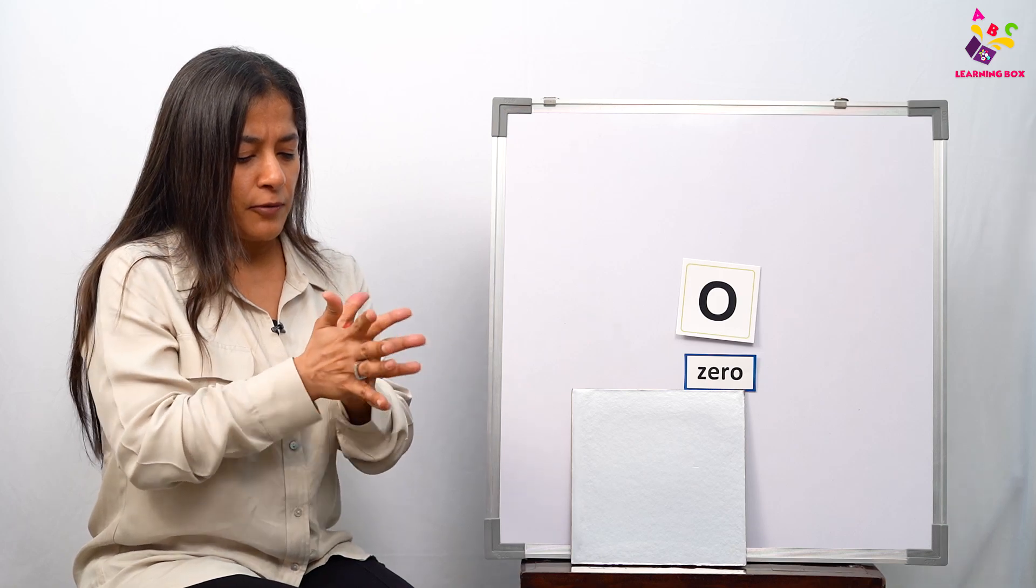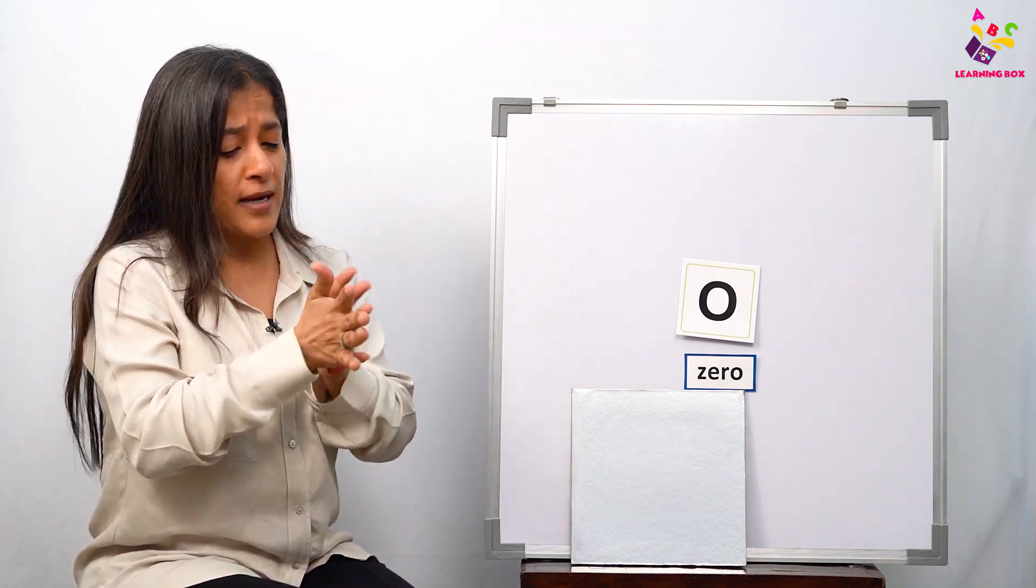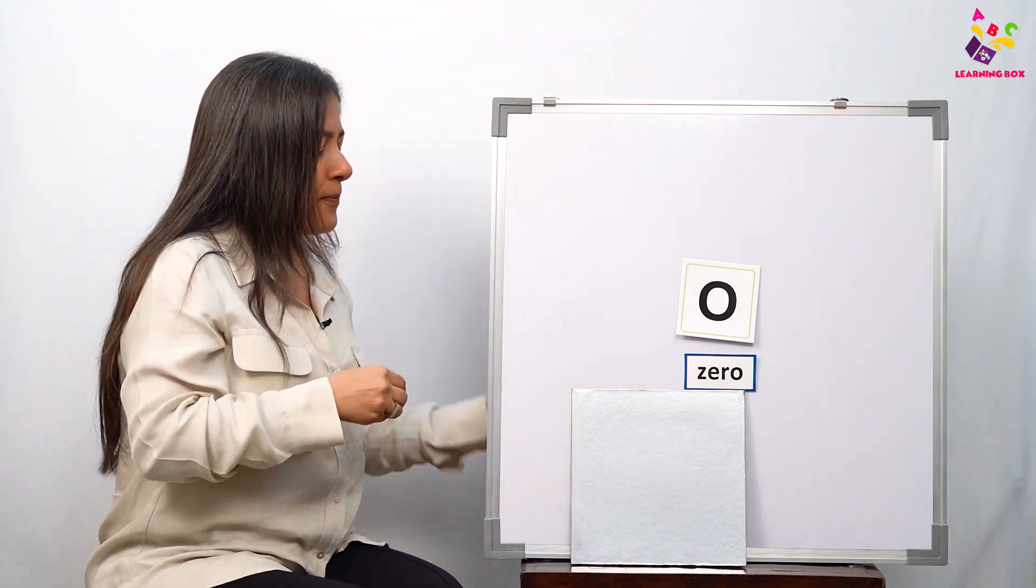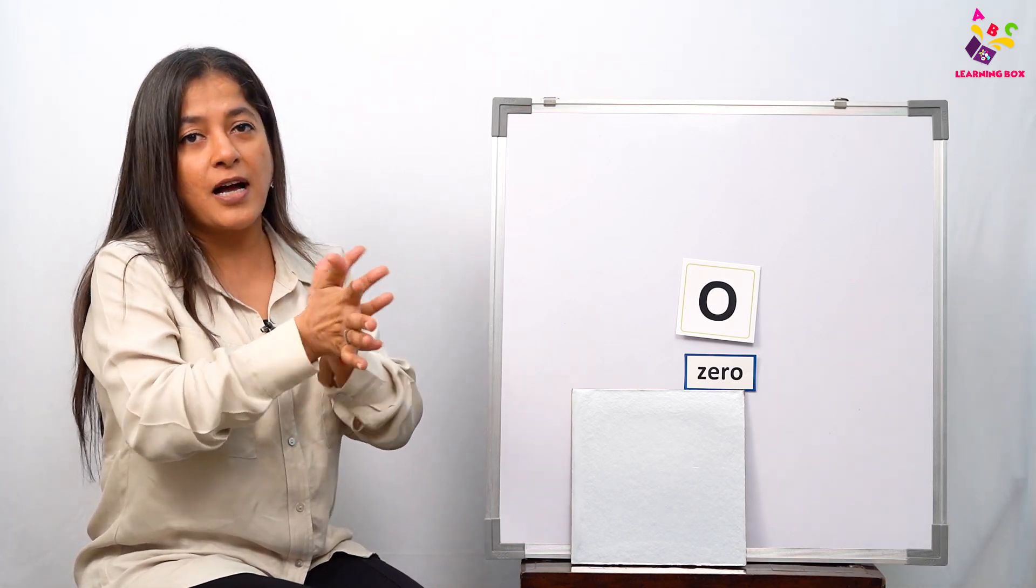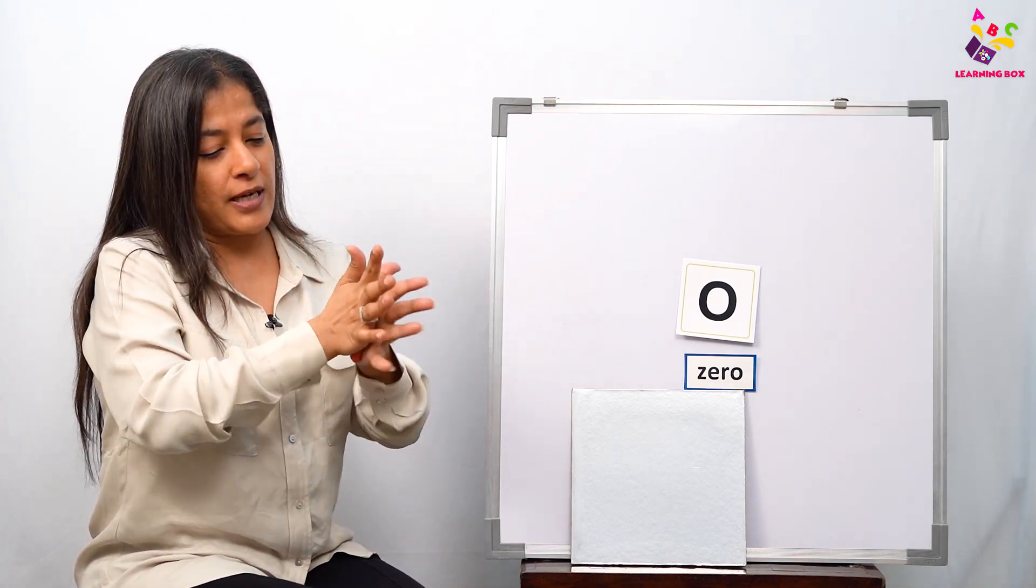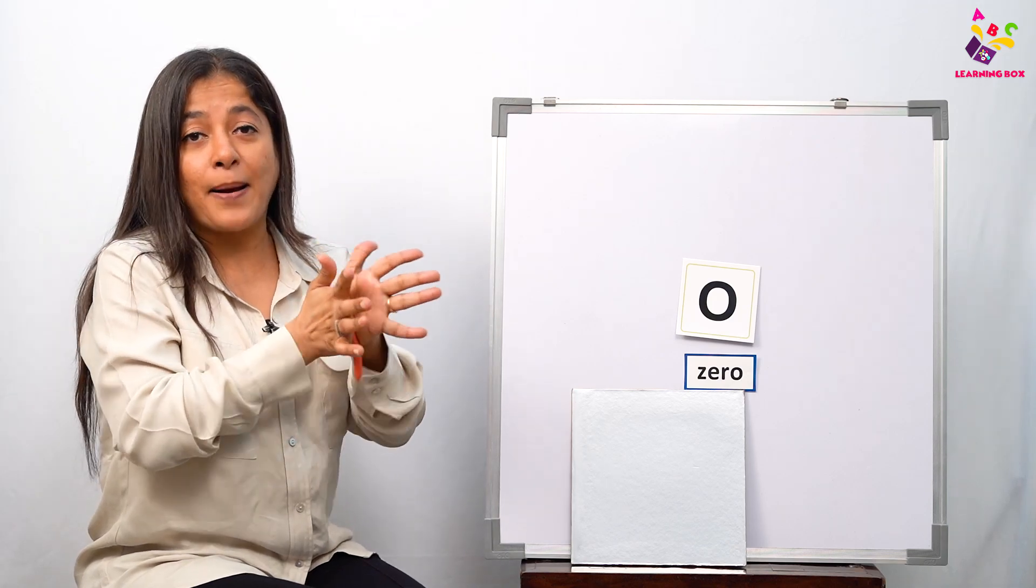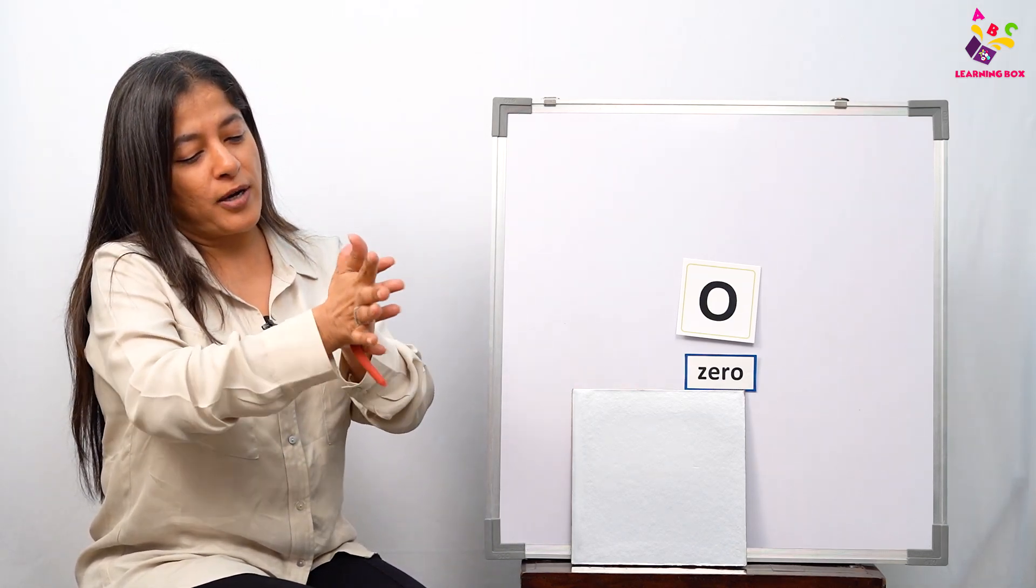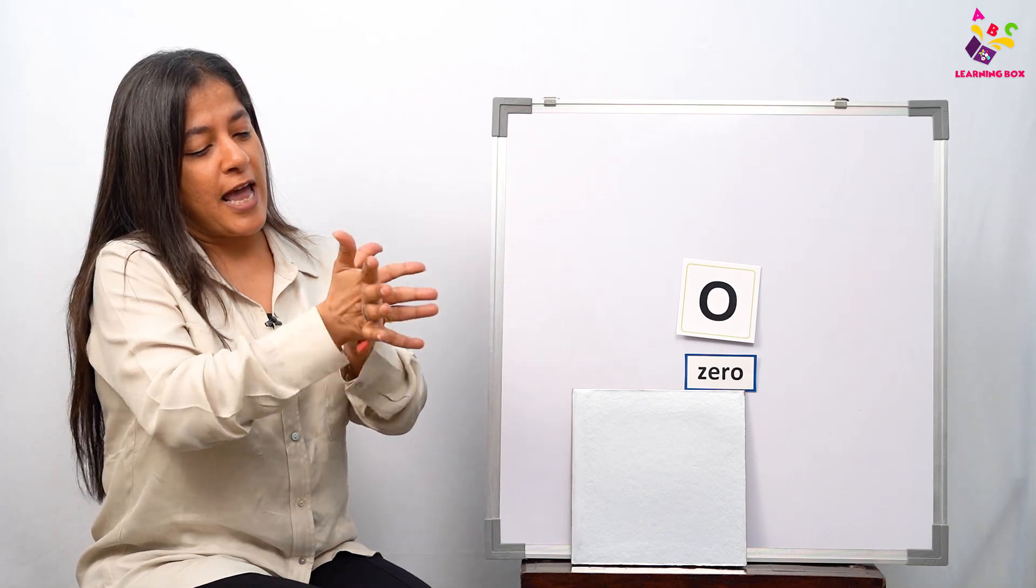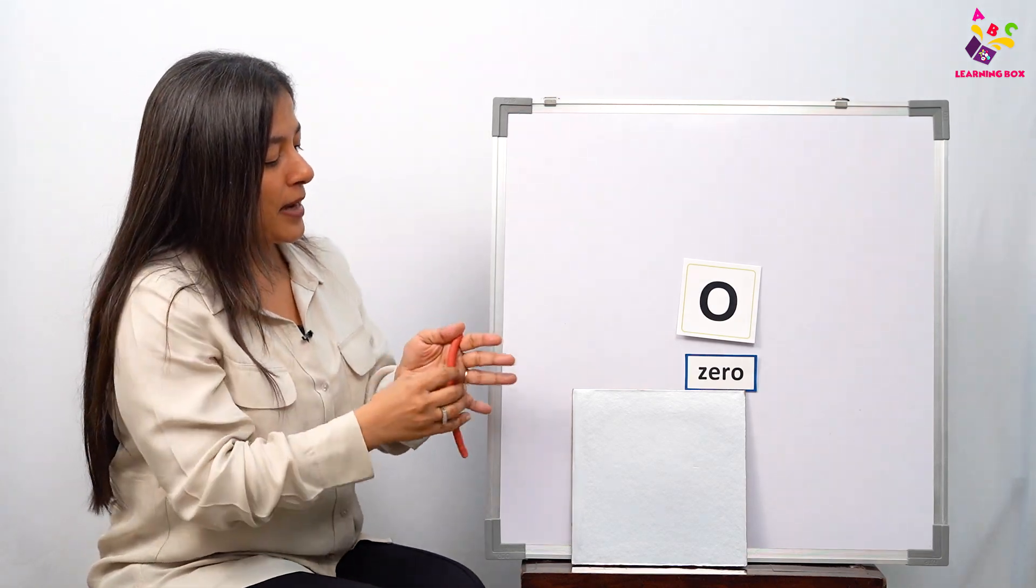First we're going to make a snake. Remember, I've always told you when you're making something with clay, you have to first make a snake. It helps you make your letters and numbers easily. So let's make a snake, and then make a nice big fat circle to make number zero.